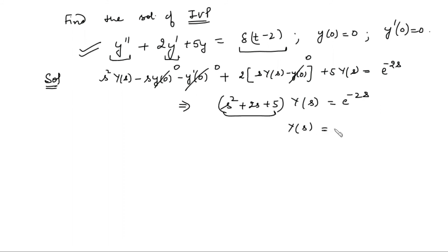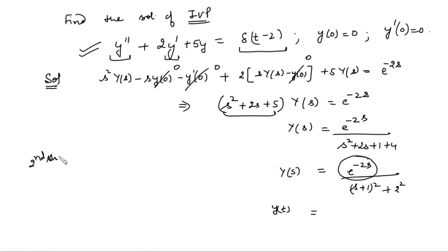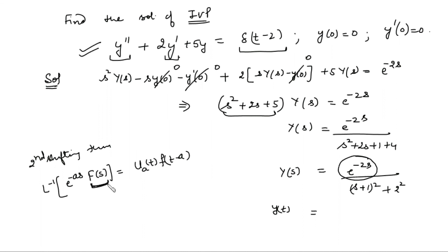Taking the term to the other side, Y(s) equals e to the power minus 2s over (s plus 1) squared plus 4, which is a complete square: (s plus 1) whole square plus 2 squared. Since e to the power minus as is involved, we apply the second shifting theorem to find the inverse Laplace transform. The inverse Laplace of e to the power minus as times F(s) equals unit step at a times f(t minus a).